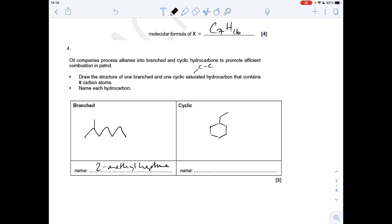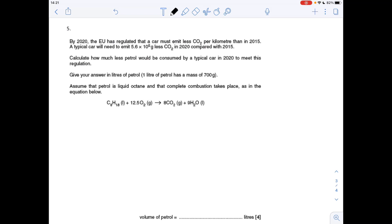I've got two more carbons to put on, so I'll just put an ethyl group on it. That will be called ethylcyclohexane. Question five now. The first thing we need to do is work out how many moles of CO2 needs to be reduced from the mass, and then we can use the mole ratio to get the moles of octane which is the petrol.